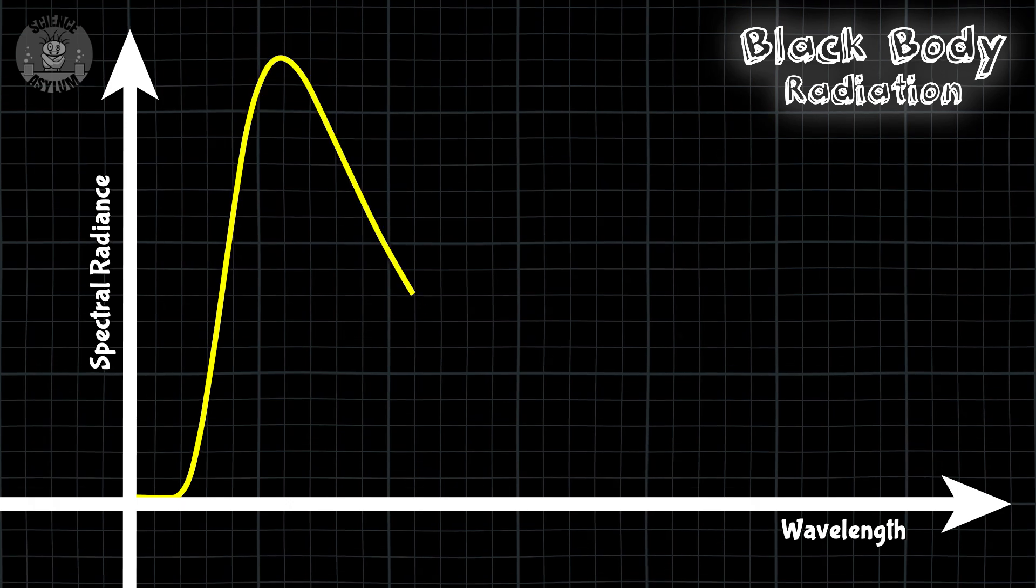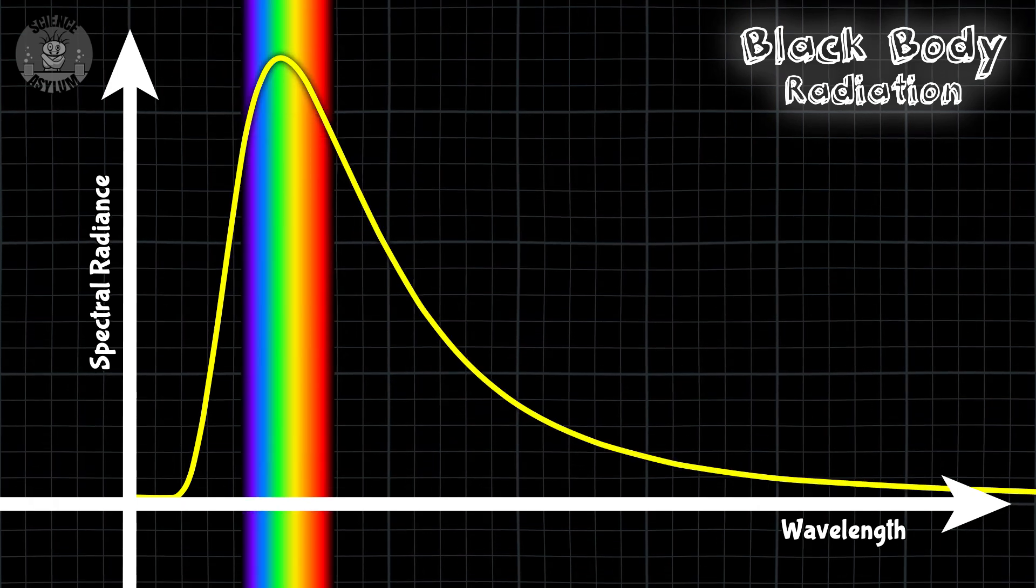The vast majority of light emitted by the sun is visible, so it shouldn't be that surprising that animals evolved to see light in or near this range. Seeing in X-rays or radio just wouldn't be that useful.